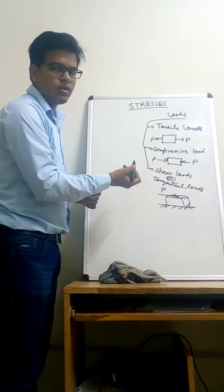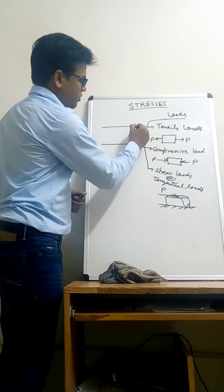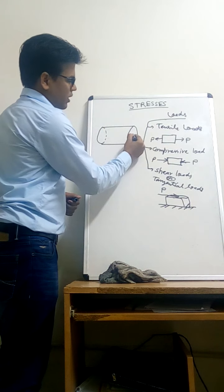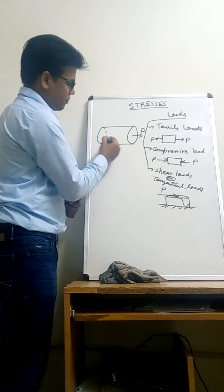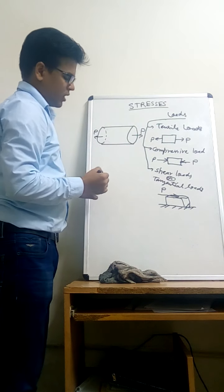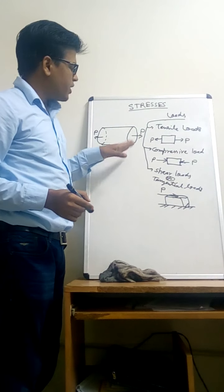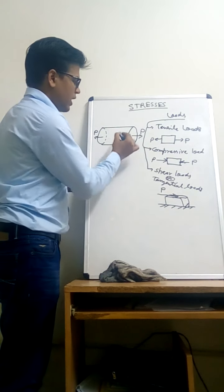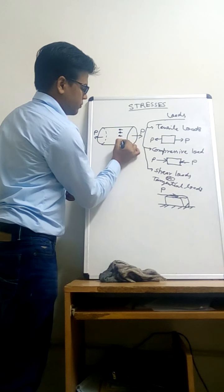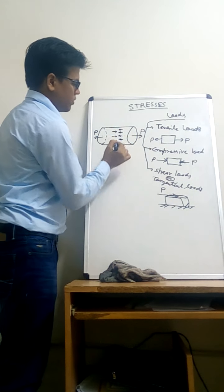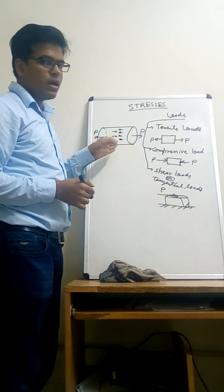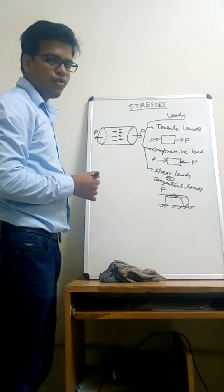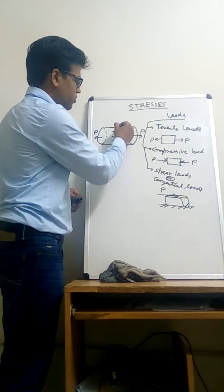Let us consider a cylindrical prismatic bar of circular cross section with an axial tensile load T acting on its end. When loads are acting, the body will develop internal resisting forces inside. I am cutting this bar at the midpoint, perpendicular to the cross section, for a better view of the internal resisting forces — cutting along this plane.